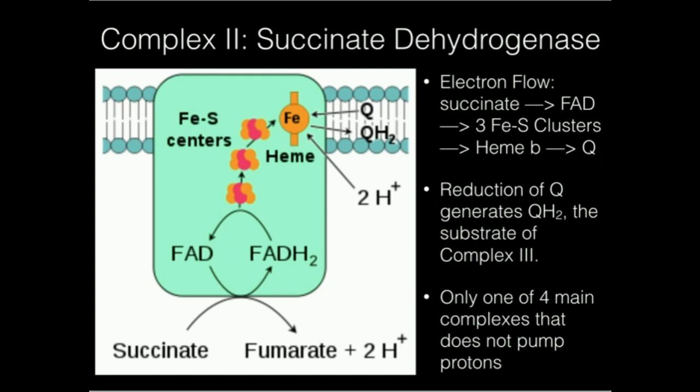So complex II in the mitochondrial respiratory chain is called succinate dehydrogenase. Now if you've done a study of the Krebs cycle, you might recognize this enzyme, because one of the enzymes about halfway through the pathway is succinate dehydrogenase.